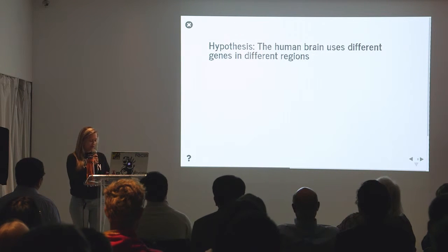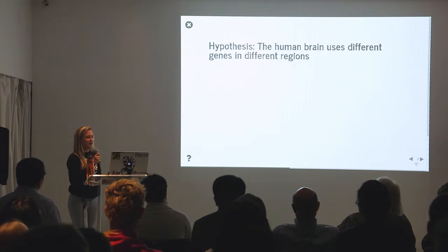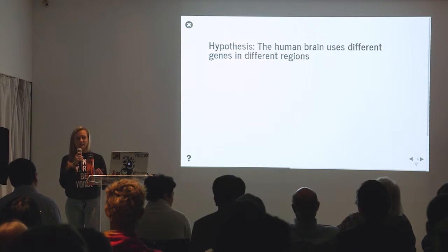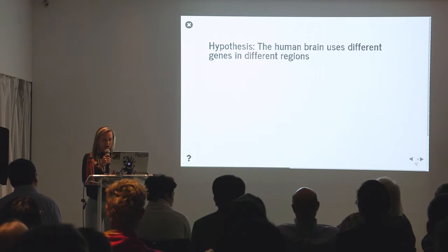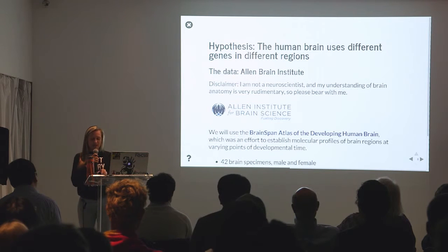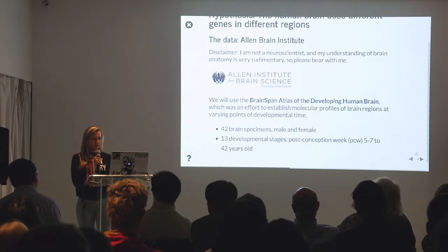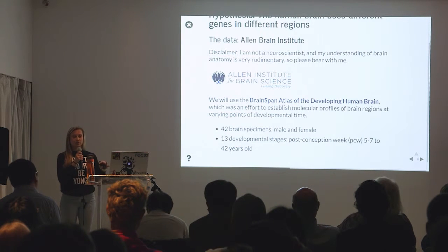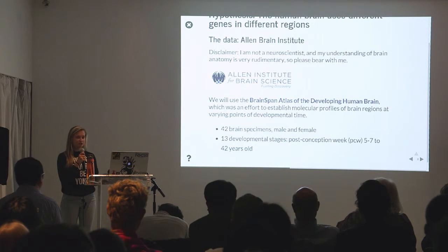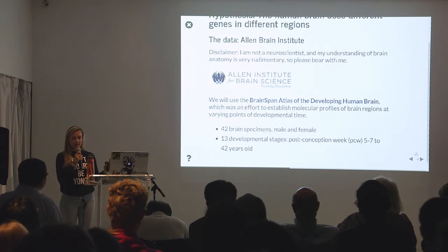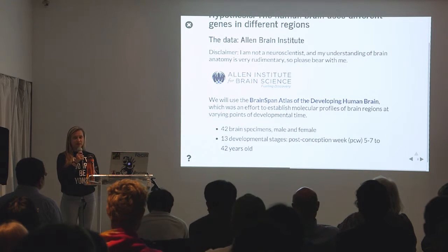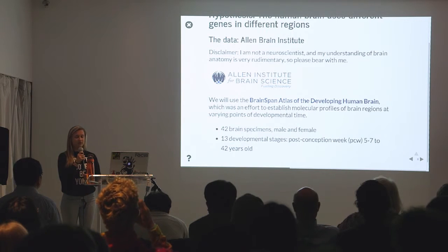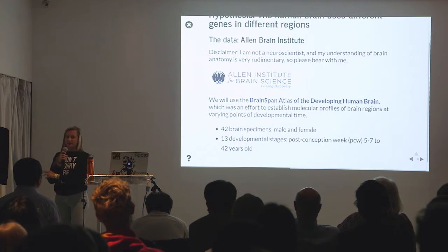So let's talk hypotheses. How about the human brain — we are at a CodeNeuro conference? We hypothesize that the human brain uses different genes, expresses different genes in different regions. The data we'll be using is from the Allen Brain Institute. They have created a dataset called the developmental transcriptome — post-mortem brain tissue extracted from many different individuals, male and female, from several brain regions, and across 13 developmental stages.